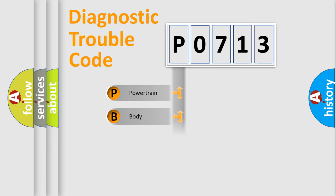Powertrain, Body, Chassis, Network. This distribution is defined in the first character code.